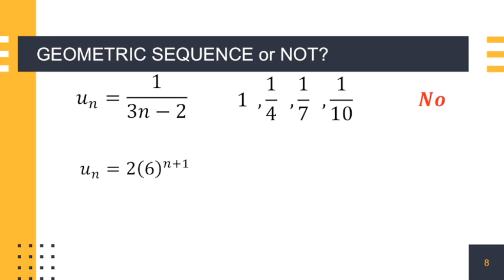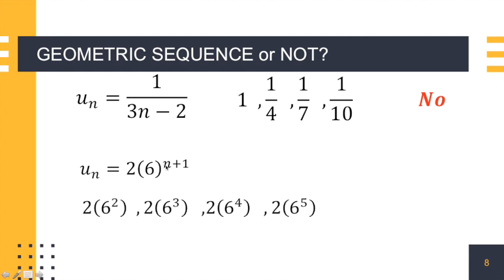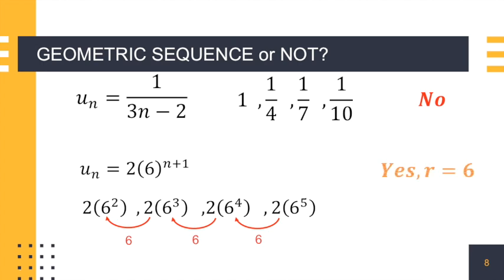Let's have the last example: u sub n is equal to 2 times 6 to the power of n plus 1. Let's get the terms in the sequence. If n is equal to 1, the first term is 2 times 6 squared. The second term is 2 times 6 cubed. 2 times 6 to the power of 4 is our third term. If n is equal to 4, that gives us 6 to the power of 5. Now let's get the ratio. 2 times 6 cubed divided by 2 times 6 squared gives a quotient of 6, and that also gives us 6 for the rest of the ratios. Therefore, it is a geometric sequence wherein r is equal to 6.